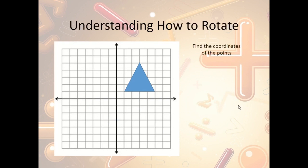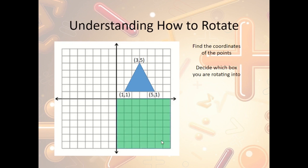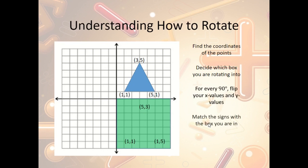To rotate a figure: first write out the coordinates. For example, (1,1), (5,1), and (3,5). Then decide which box you're rotating into — for a 90° clockwise rotation, the figure moves into the lower-right quadrant. The rule is: for every 90 degrees you rotate, flip your x's and y's — x becomes y and y becomes x. So (3,5) becomes (5,3), (1,1) becomes (1,1), and (5,1) becomes (1,5). Then match the signs to the destination quadrant — here positive x's and negative y's — so the points become (1,-1), (1,-5), and (5,-3). Plot and draw.